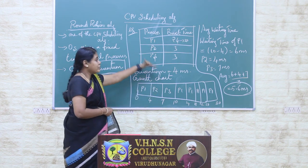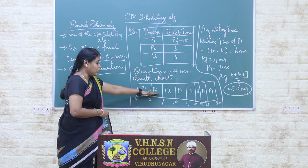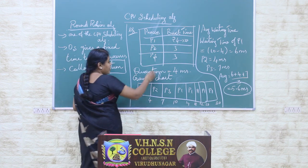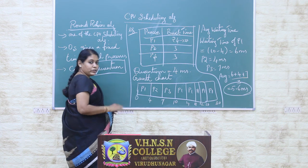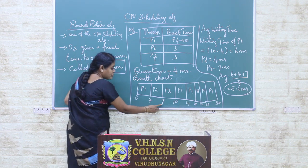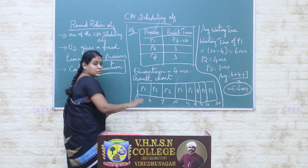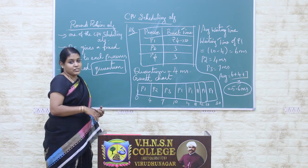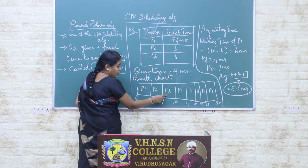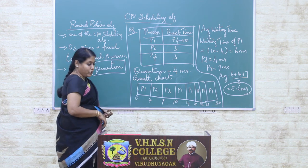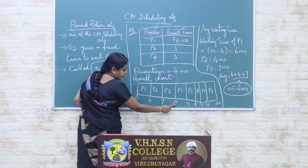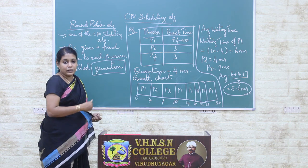After 4 milliseconds, the next process P2, which is in the process ready queue, occupies the CPU. It executes for another quantum period of 4 milliseconds. However, the burst time of P2 is only 3 milliseconds, so it does not need the full 4 milliseconds to finish. From 4 to 7 milliseconds, P2 occupies the CPU and finishes its work. At the 7th millisecond, P3 enters the CPU. Since P3's burst time is 3 milliseconds, it finishes at the 10th millisecond and exits the CPU.